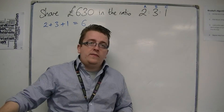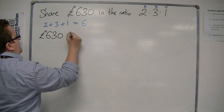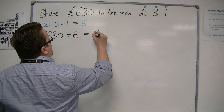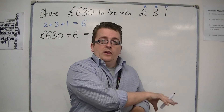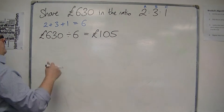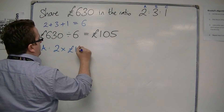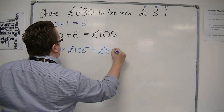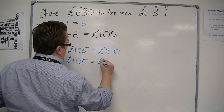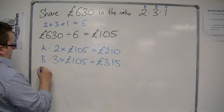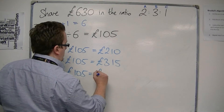We split the money up into six distinct piles — £630 into six piles — giving £105 in each pile. So person A is going to get two lots of £105, which is £210. Person B is going to get three portions of £105, which is £315. And person C is going to get one portion of £105, which is just £105.